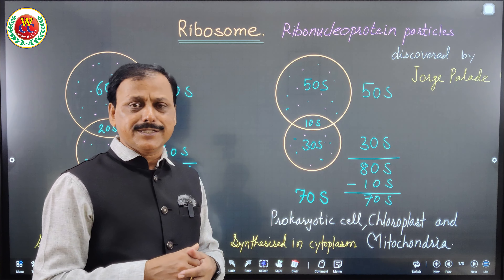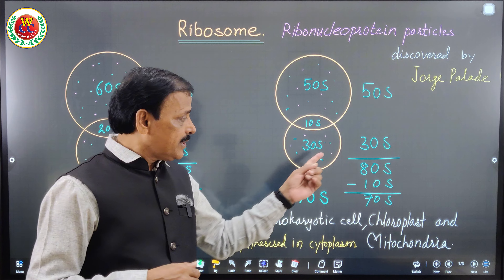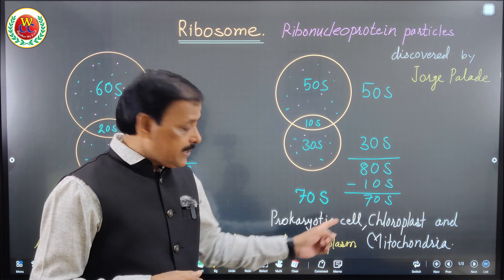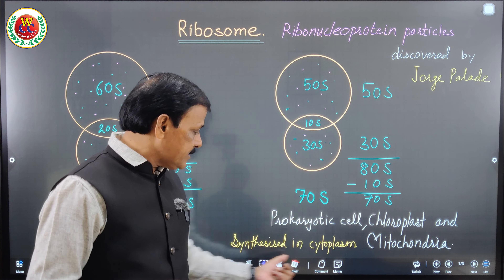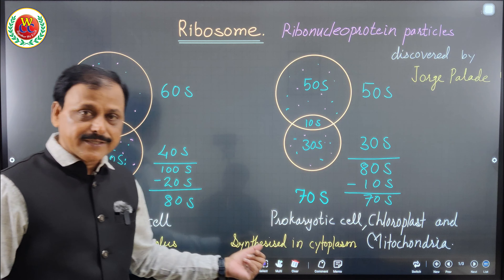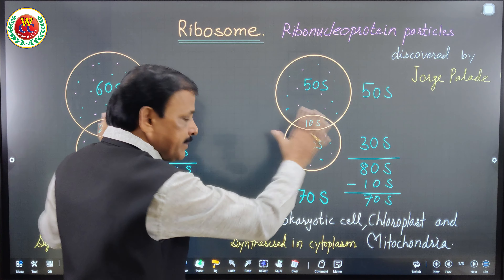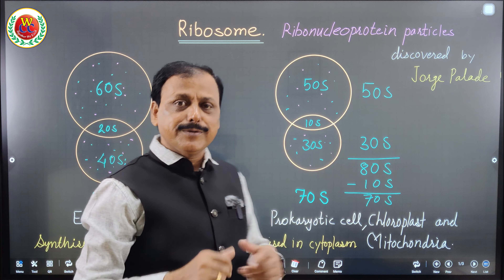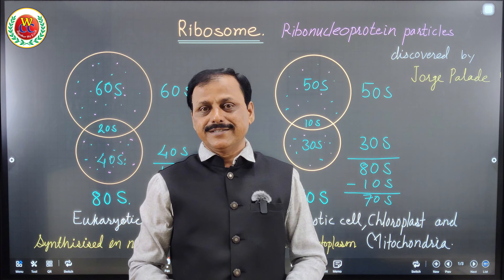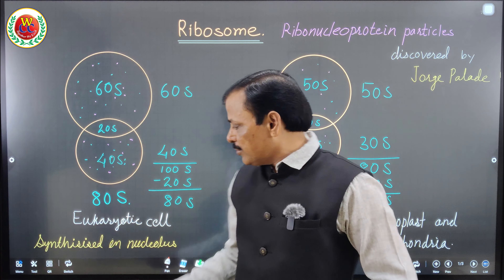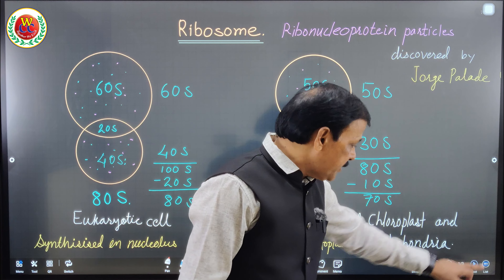In prokaryotic cells, since they don't have organelles or a nuclear membrane — they have a nucleoid instead — there is no nucleolus. Therefore, in prokaryotic cells, ribosomes are synthesized in the cytoplasm. I have drawn these separately so it is easy to differentiate and study.